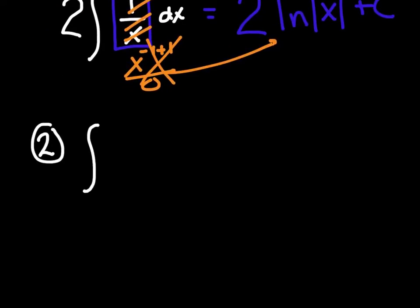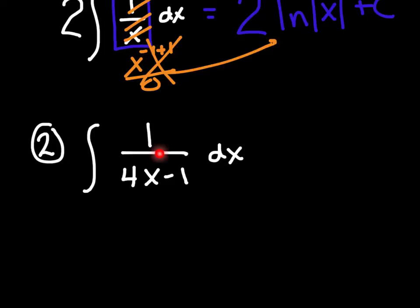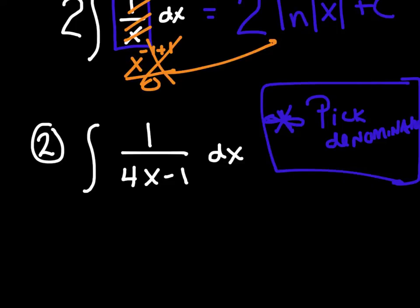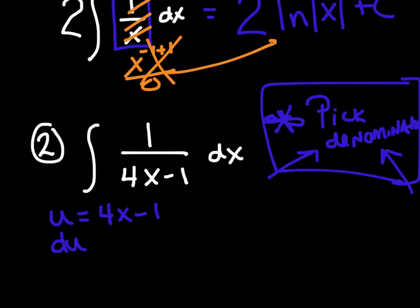Example 2: the integral of 1 over (4x minus 1) dx. First, ask yourself: is that somebody's derivative? No. So I need u-substitution. Note in your book: if you have a fraction and no obvious u, pick the denominator. So my u is 4x minus 1.